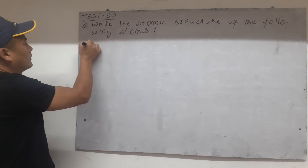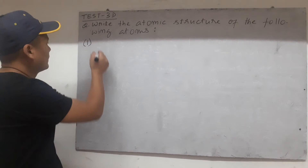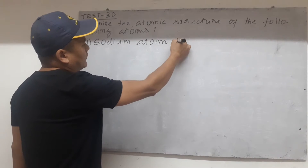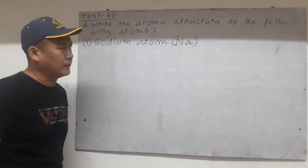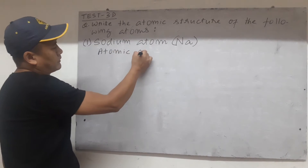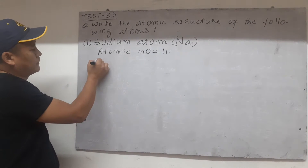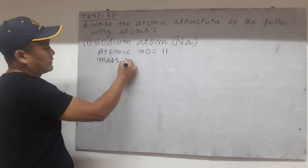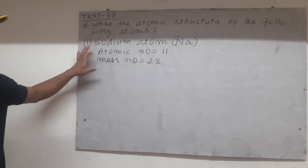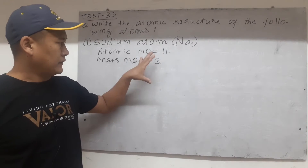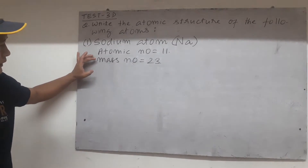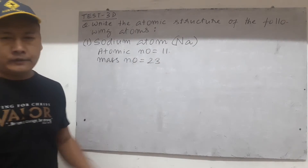The first one. Let's draw the structure of the sodium atom. Sodium atom has the symbol Na. Its atomic number, write it down, is 11. And the mass number — every atom has got atomic number and mass number — mass number is 23. So if we have the atomic number and the mass number as given here for sodium, we can easily draw the structure.